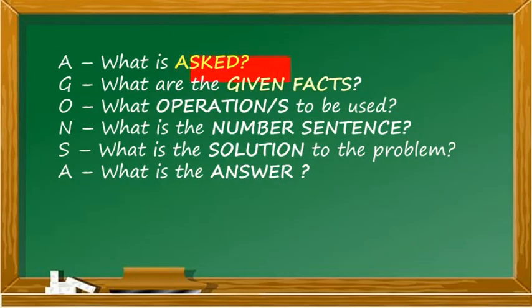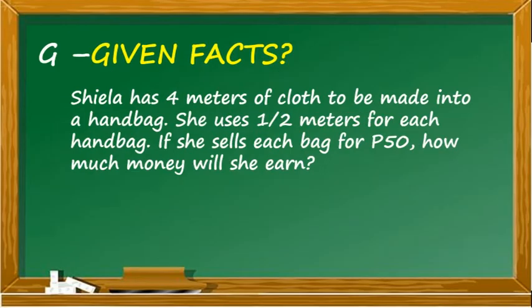The second step is to determine what are the given facts. The given facts in the problem are 4 meters of cloth, 1 half per meter of cloth, and 50 pesos per bag.